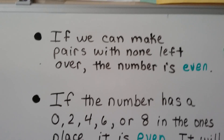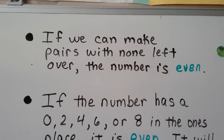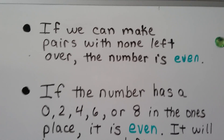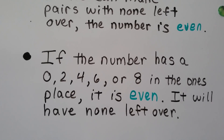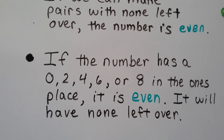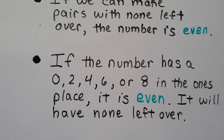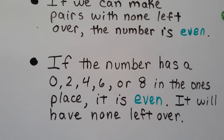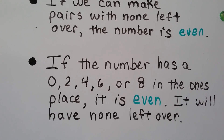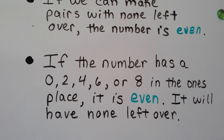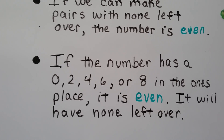If we can make pairs with none left over, the number is even. If the number has a 0, 2, 4, 6, or 8 in the ones place, it is even. It will have none left over.